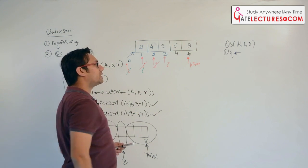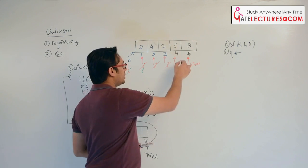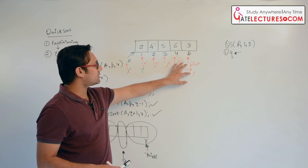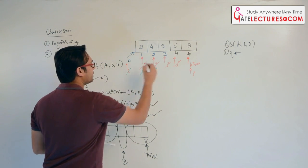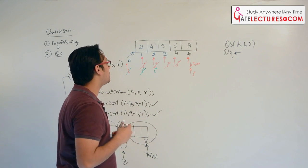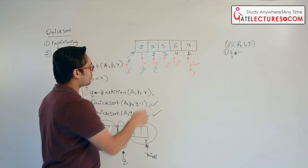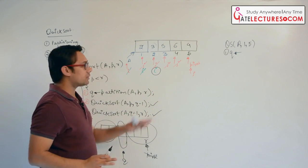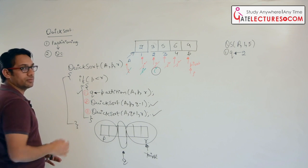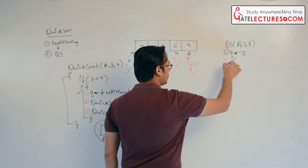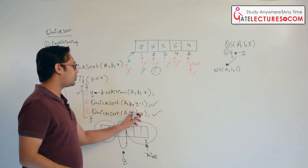5 is greater than 3, so we do nothing; increment j. 6 is greater than 3, we do nothing; increment j. The next value is less than or equal to the pivot, so we increment i and swap the values pointed by i and j. Therefore, 3 comes here and 4 moves there. After this, the value of i is 2, so q gets the value 2. We have executed line number 1. Now we execute line number 2: quicksort(a, 1, 1) — since p equals r, the condition fails and nothing happens.